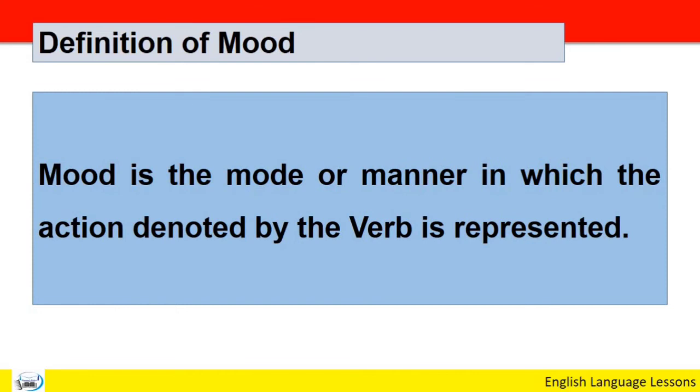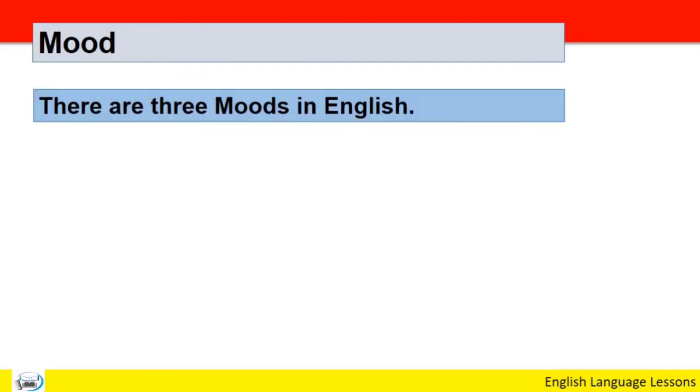To verb ka jo tor tareeqa hota hai, jo andaz hota hai, is ko English mein moods kehte hain. Definition kya hai: Mood is the mode or manner in which the action denoted by the verb is represented. Verb se jo action zahir kiya gaya hota hai, woh jis andaz mein numayandagi karta hai, jis manner mein karta hai, jis mode mein karta hai, is ko mood kehte hain.